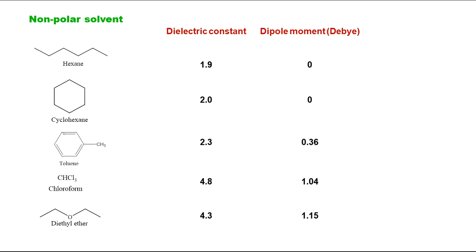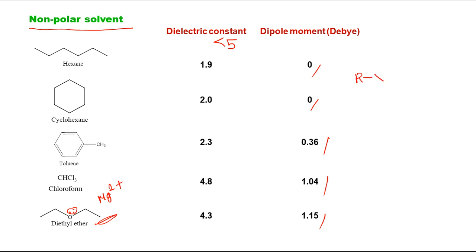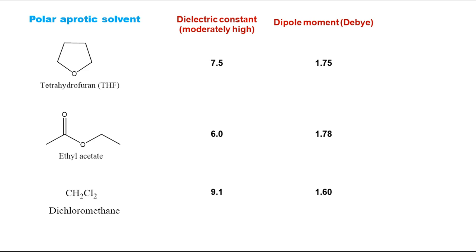For non-polar solvents, dielectric constant values are mostly less than 5 and dipole moment is zero or less than 2. One example is the Grignard reagent preparation using diethyl ether, where the lone pair of oxygen helps stabilize Mg²⁺. Another example is RX reacting with lithium in hexane or pentane, forming RLi and LiX — these reactions use non-polar solvents.